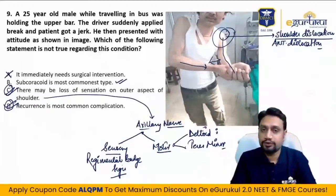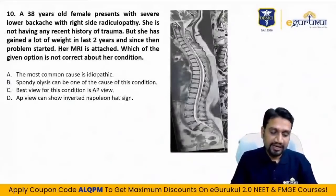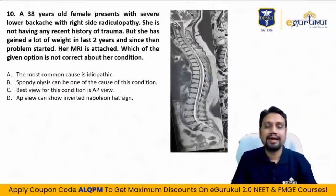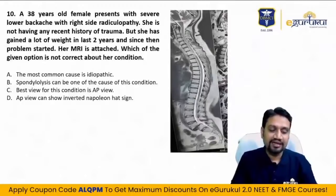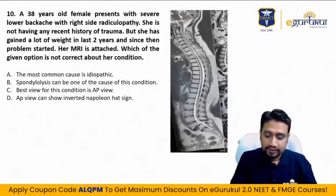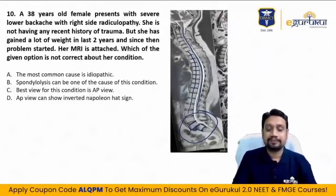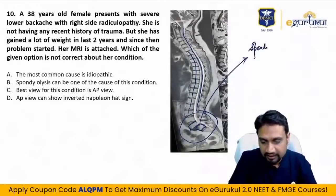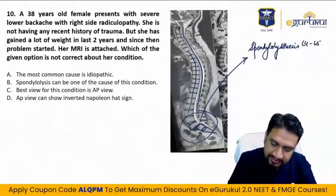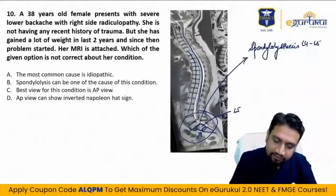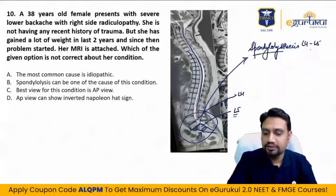Tenth question: a 38-year-old female presents with severe lower backache with right-sided radiculopathy, no recent trauma, gained a lot of weight in last two years, and the problem started since then. Looking at the MRI: the spinal cord is visible, most vertebrae seem okay, but at one level there is spondylolisthesis — at L4 over L5 level.